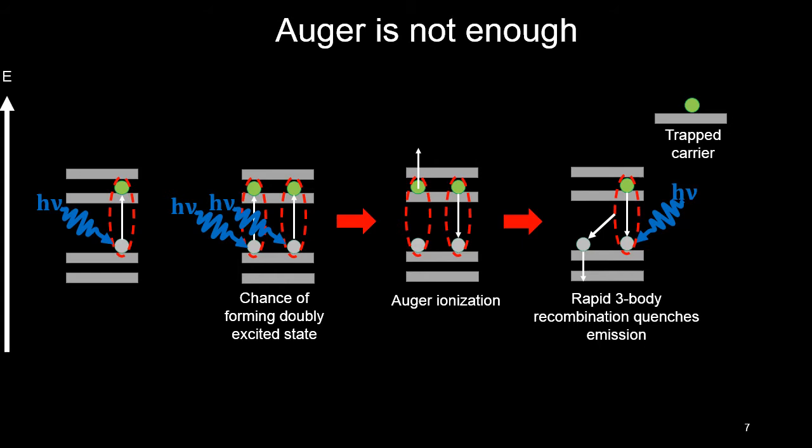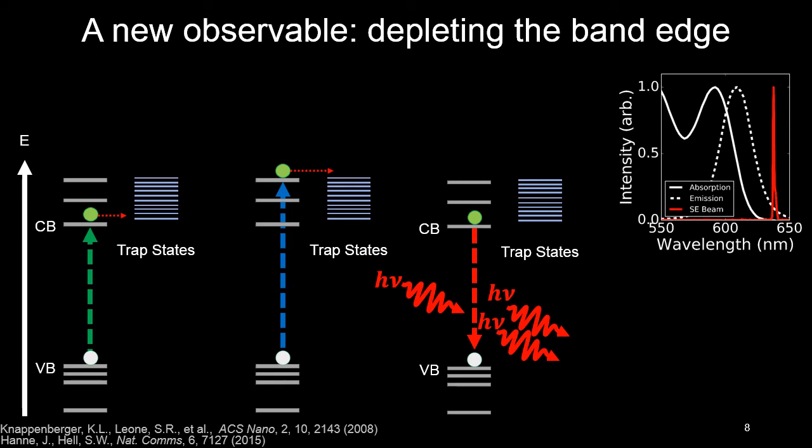It turns out that for a couple reasons, this type of mechanism is not enough to explain the quantitative features of blinking. The experiment we wanted to do was to find a new observable, a new handle to investigate what's really going on with blinking.